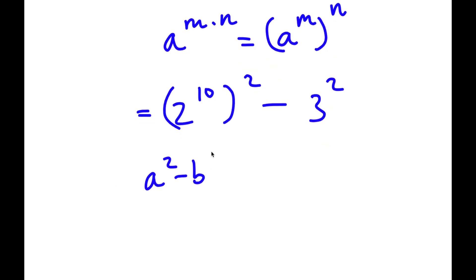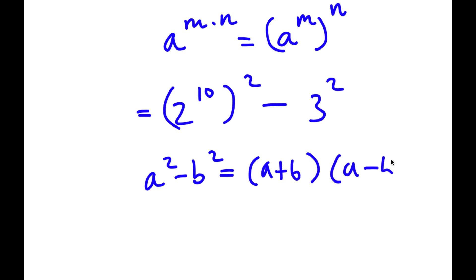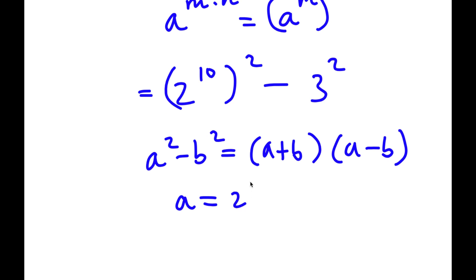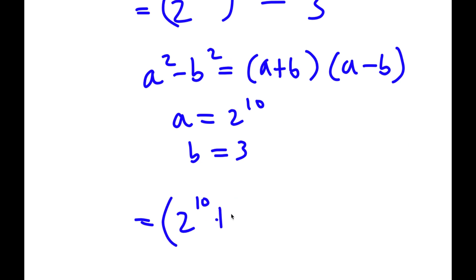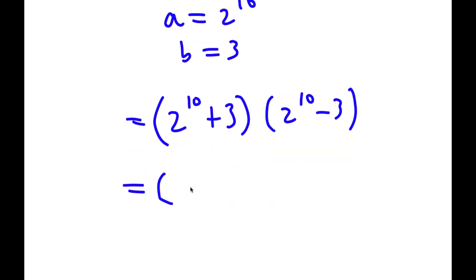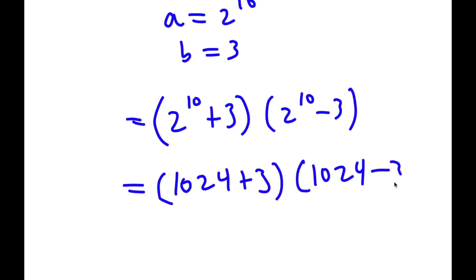Now if I have something in the form a squared minus b squared, this equals a plus b times a minus b. In this case, a is 2 to the power of 10 and b is 3. So now I have 2 to the power of 10 plus 3, times 2 to the power of 10 minus 3. Now 2 to the power of 10 equals 1,024, so I have 1,024 plus 3 times 1,024 minus 3.